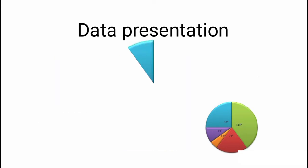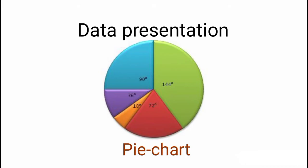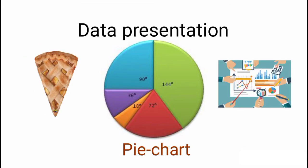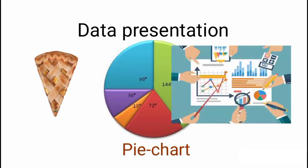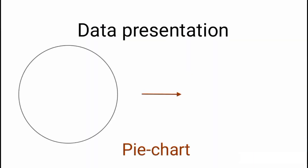Today we will look at the pie chart. A pie chart is a type of graph that displays data in a circular graph. In simple words, a pie chart uses pie slices to show relative sizes of data. The chart begins with a circle and then it's divided into sectors.